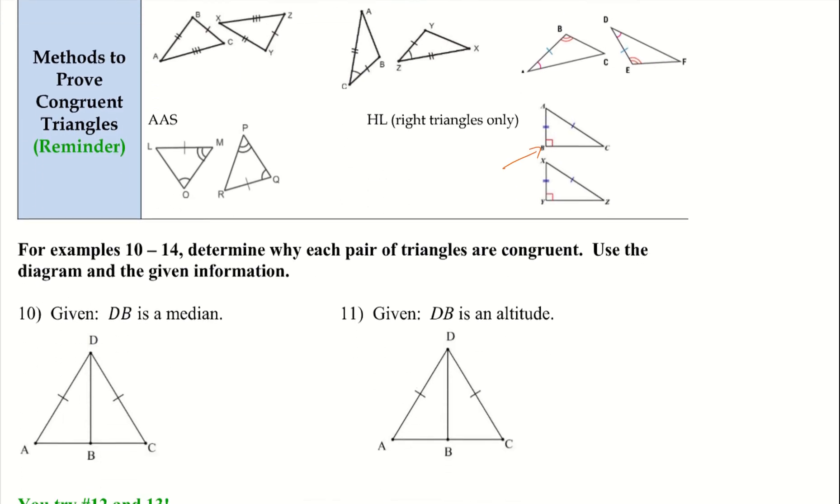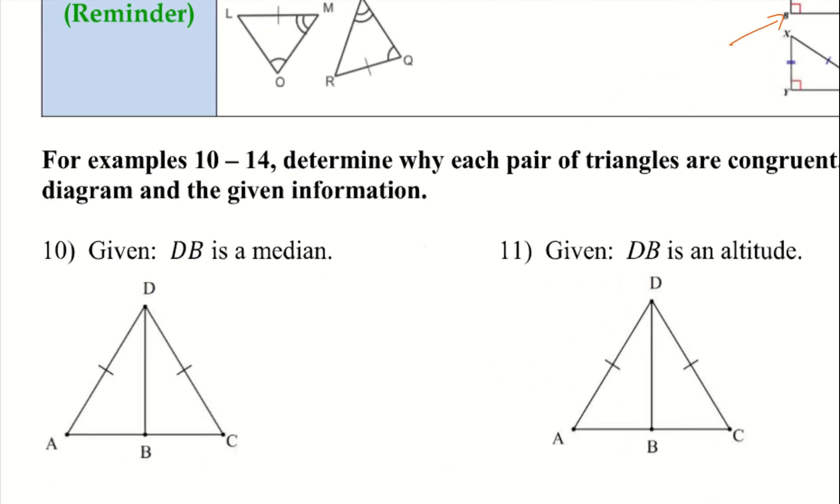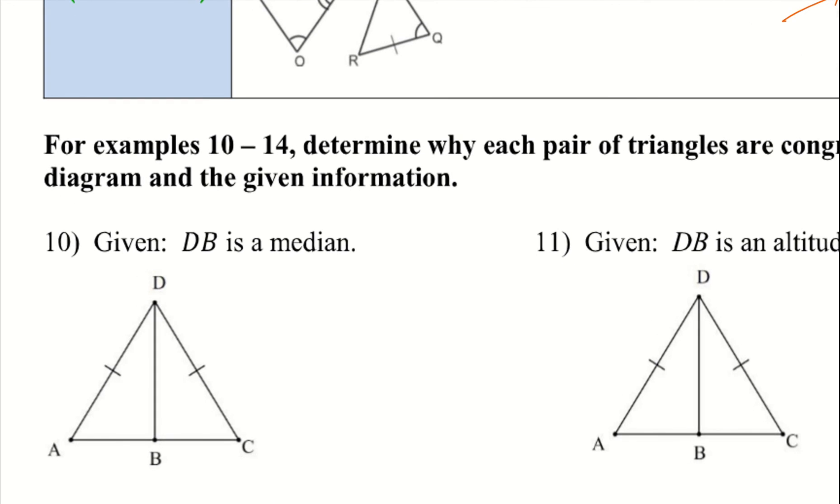Let's try 10 and 11. Number 10, it tells us that DB is a median. So since DB is a median, I know that these two parts are congruent. Then we have this middle line here, and remember if we use the reflexive property, that just says one line is congruent to the same line. So this line here DB is congruent to itself. Now if I take a look at the parts I have, I have a side, a side, and a side. I don't know any angles, so side-side-side. And that's how I can prove that these two triangles are in fact congruent.